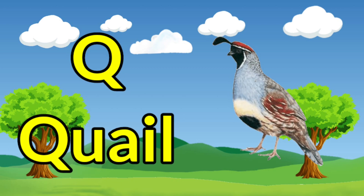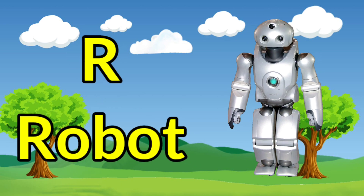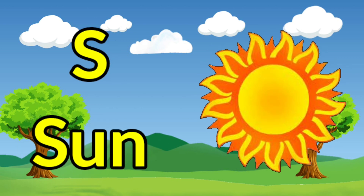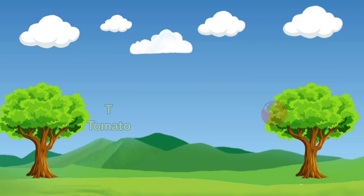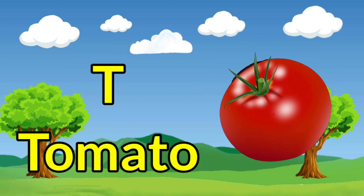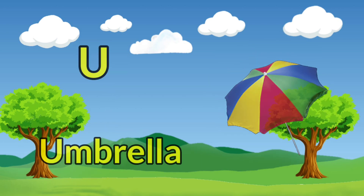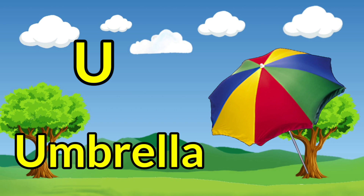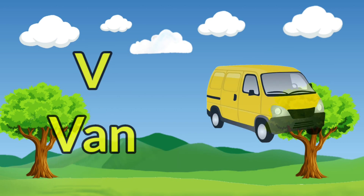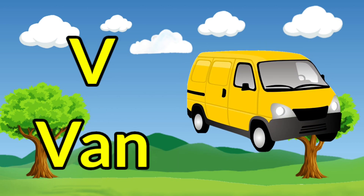Q for queen, R for robot, S for sun, T for tomato, U for umbrella, V for van.